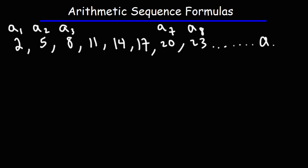A sub n is just a generic term in this sequence. Notice that we have a common difference between the terms. To get the next term, you need to add 3, so the common difference is 3. If it's addition, the common difference will be positive; if it's subtraction going left to right, the common difference will be negative.